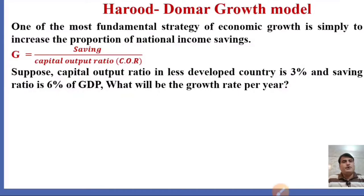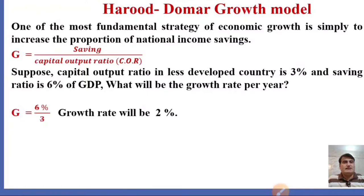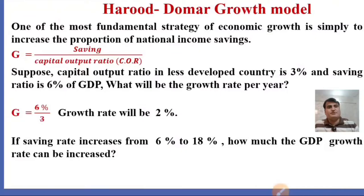What will be the growth rate per year? Suppose the capital output ratio in less developed countries is 3 and the saving ratio is 6% of GDP. Using the formula G = S/COR, the saving rate is 6% and capital output ratio is 3, so the growth rate will be 2%. If the saving rate increases from 6% to 18%, the growth rate will be 6%, because saving has increased.